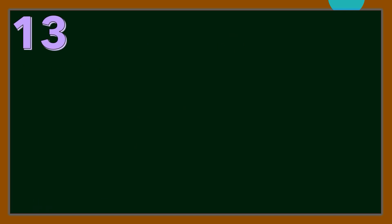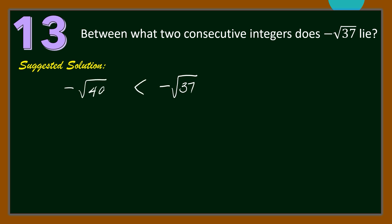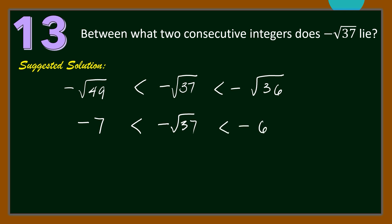Number 13. Between what consecutive integers does negative of square root of 37 lie? For our solution, notice that negative of square root of 37 is between negative of square root of 49 and negative of square root of 36. So negative of square root of 37 is between negative 7 and negative 6.